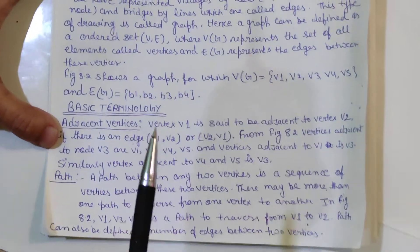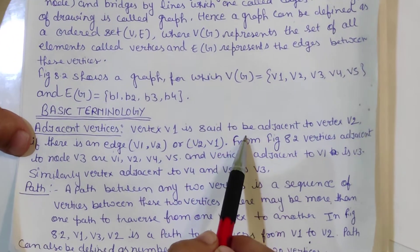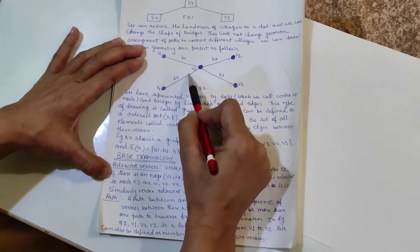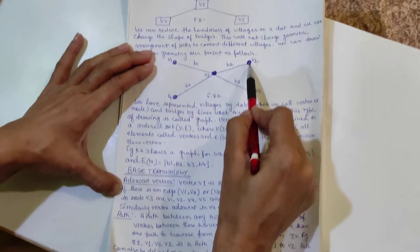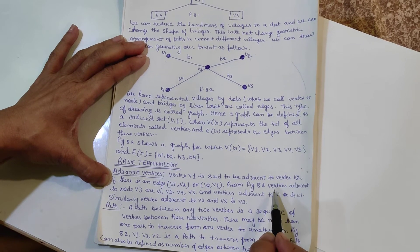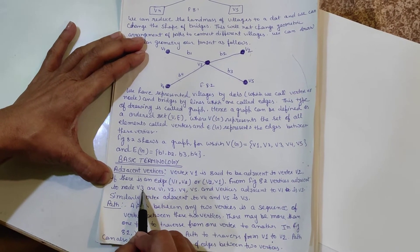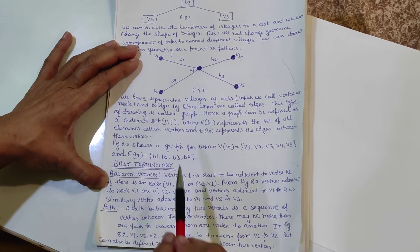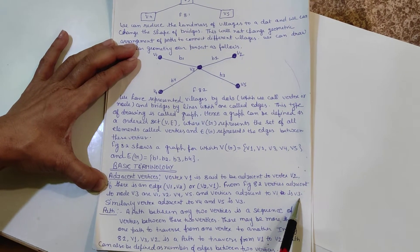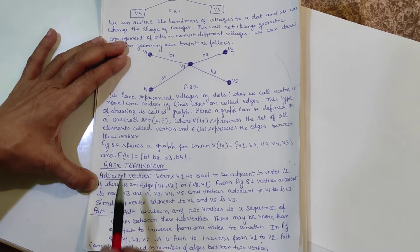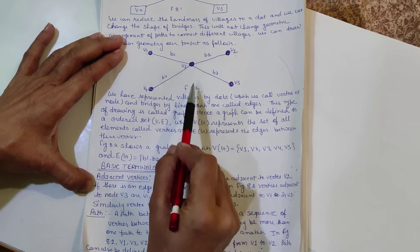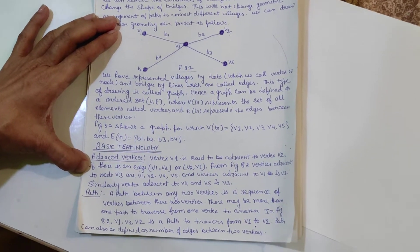Vertex V1 is said to be adjacent to vertex V2 if there is an edge V1,V2 or V2,V1. In figure 8.2, vertices adjacent to node V3 are V1, V2, V4, V5, and vertices adjacent to V1 is V3. Same way, vertex adjacent to V4 and V5 is V3.